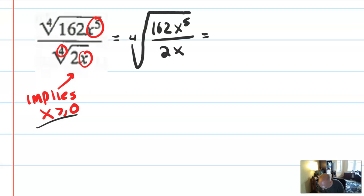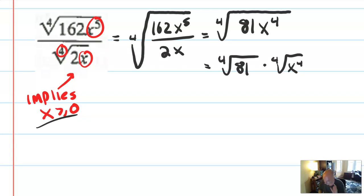So this is still the fourth root. But now I can, I don't even need to make it a fraction anymore. I'm going to have a fourth root. 162 over 2 is 81. And x to the 5th over x is x to the 4th. Okay, so this is then the fourth root of 81 times the fourth root of x to the 4th. Fourth root of 81 is 3. Why? Because 3 to the 4th is 81. And the fourth root of x to the 4th is absolute value of x. Why?